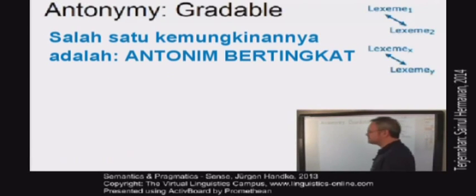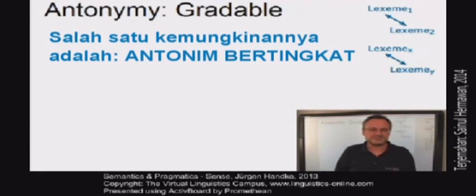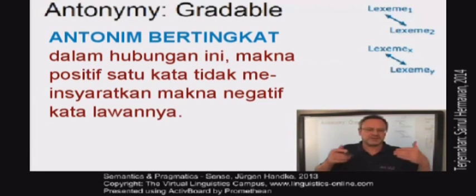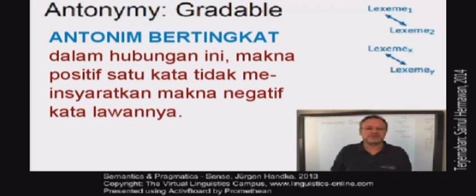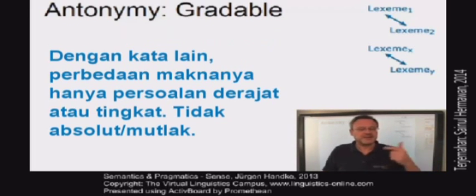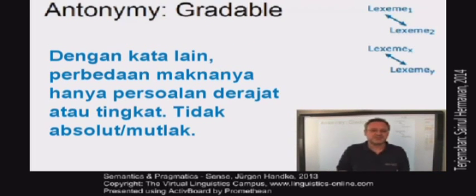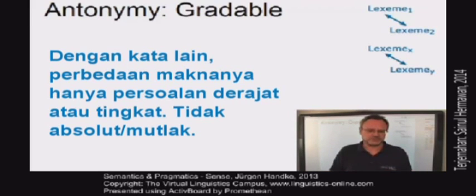One possibility is referred to as gradable antonymy. This is a relationship between opposites where the positive of one term does not necessarily imply the negative of the other. In other words, the opposition is a matter of degree rather than absolute.